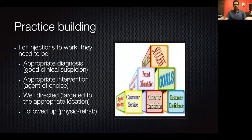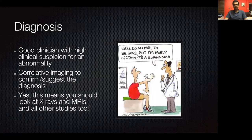For injections to work, the most important things are an appropriate diagnosis with good clinical suspicion, an appropriate intervention — meaning we inject the right thing into the right location, a well-directed injection placed exactly where you want it, and typically this should be followed by appropriate rehab and physiotherapy. To get a good diagnosis, you need a good clinician with high clinical suspicion for abnormality, which is why I work in coordination with orthopedic colleagues rather than injecting independently.